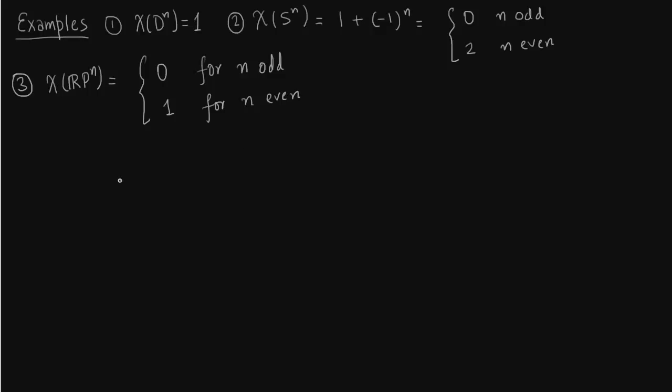Now Euler characteristic of CP^n. Now CP^n is pretty straightforward. You know everything exists in even dimensions. And because of that one adds up. So you add up for all the cells. All the even dimension cells you add up. And you get n plus one.